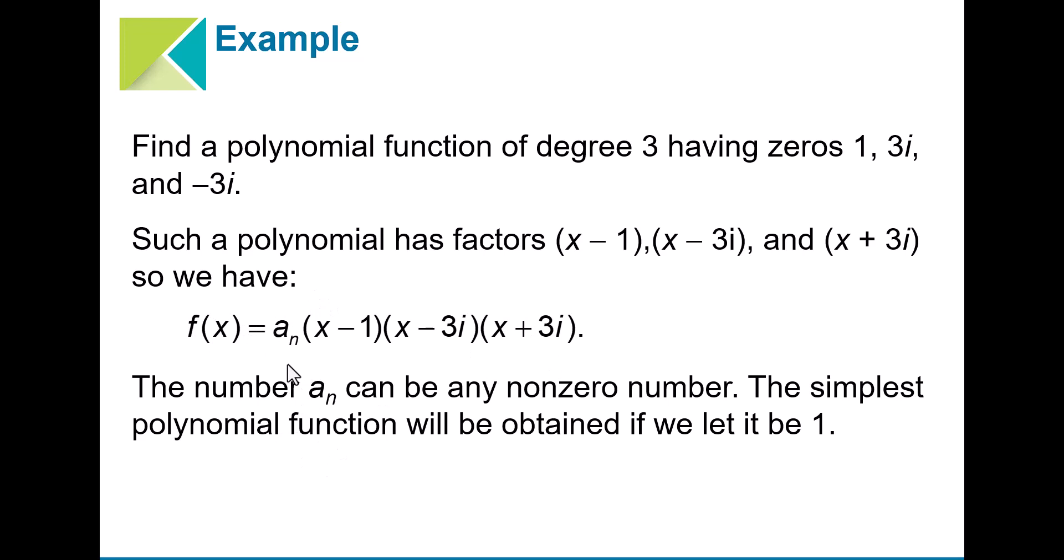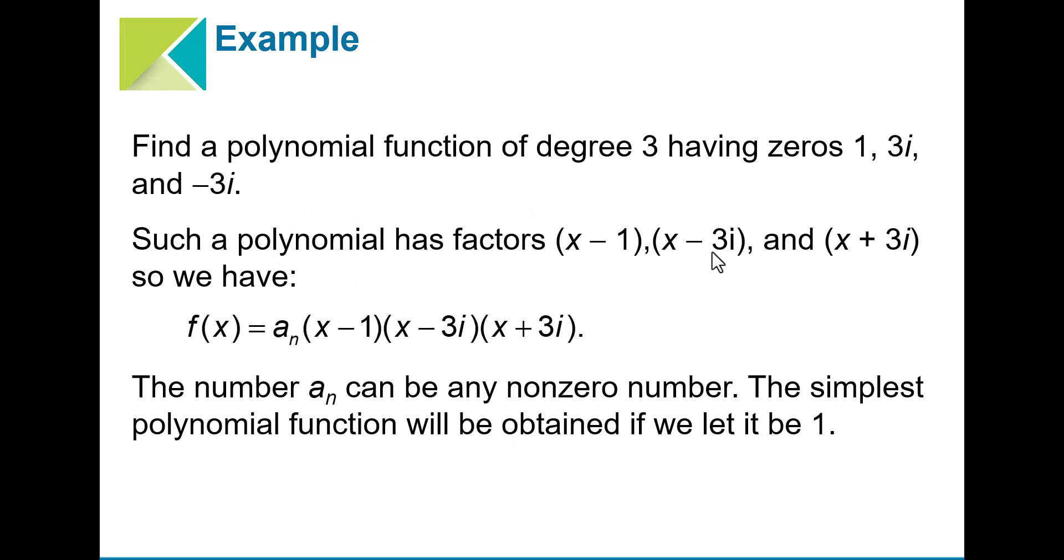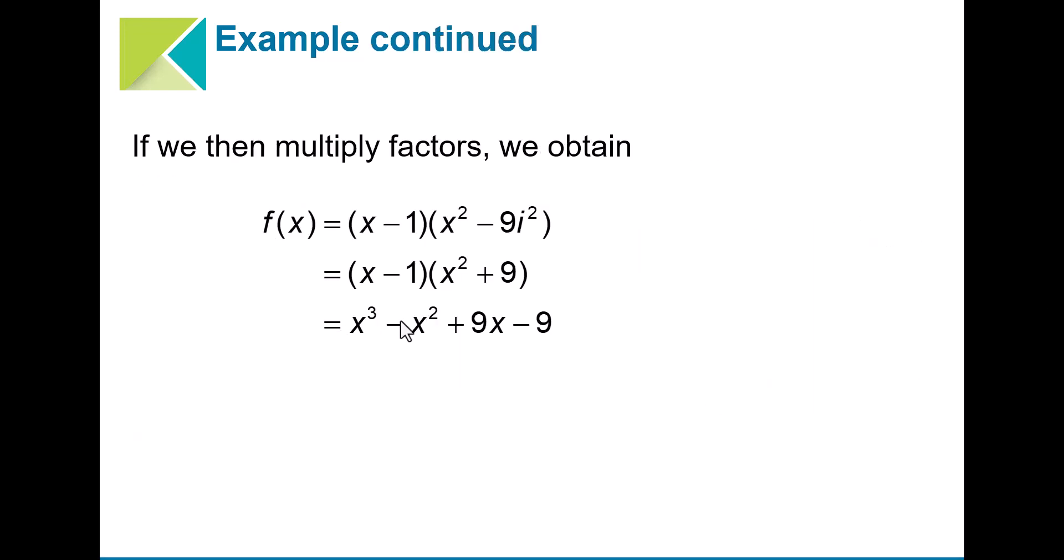The number a sub n can be any non-zero number, but to make it simple we leave this as 1. If I multiply these two factors first, I get x squared minus 9i, because the middle term is going to cancel out. Then multiply this completely out, and I get my polynomial.